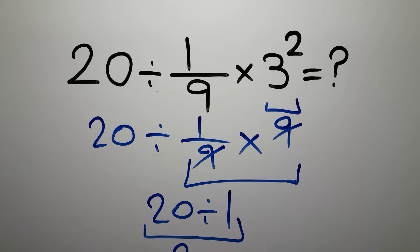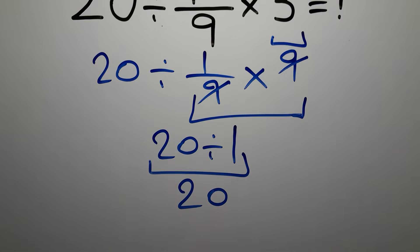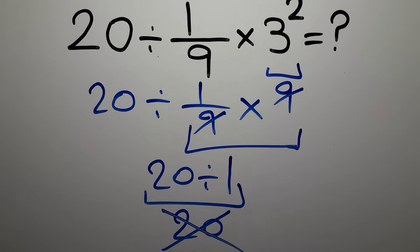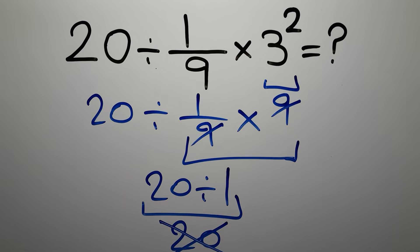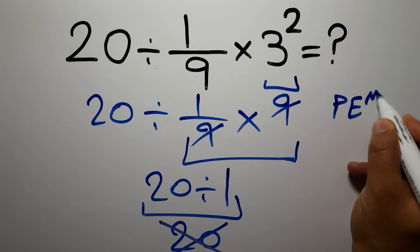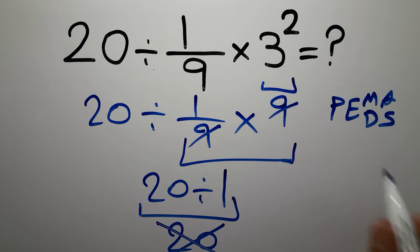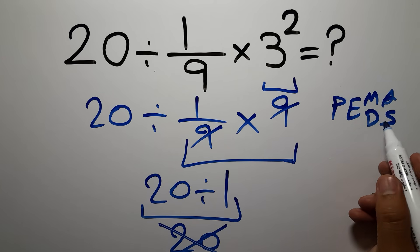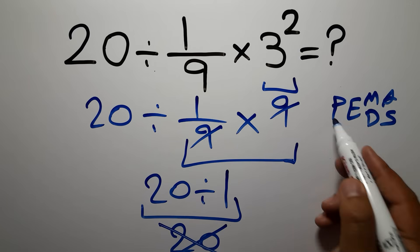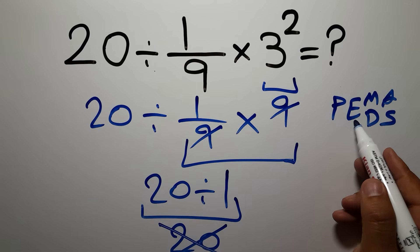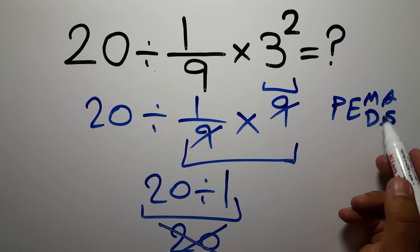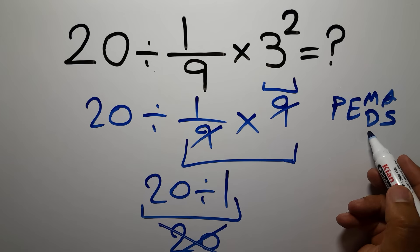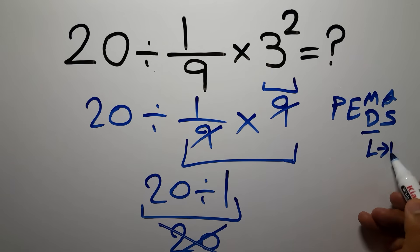But this answer is not correct, because according to the order of operations, which is PEMDAS — P stands for parentheses, E stands for exponents, M and D stands for multiplication and division, and A and S stands for addition and subtraction. First we do parentheses, then exponents, then multiplication or division, and finally addition or subtraction. Remember that multiplication and division have equal priority and we have to work from left to right.